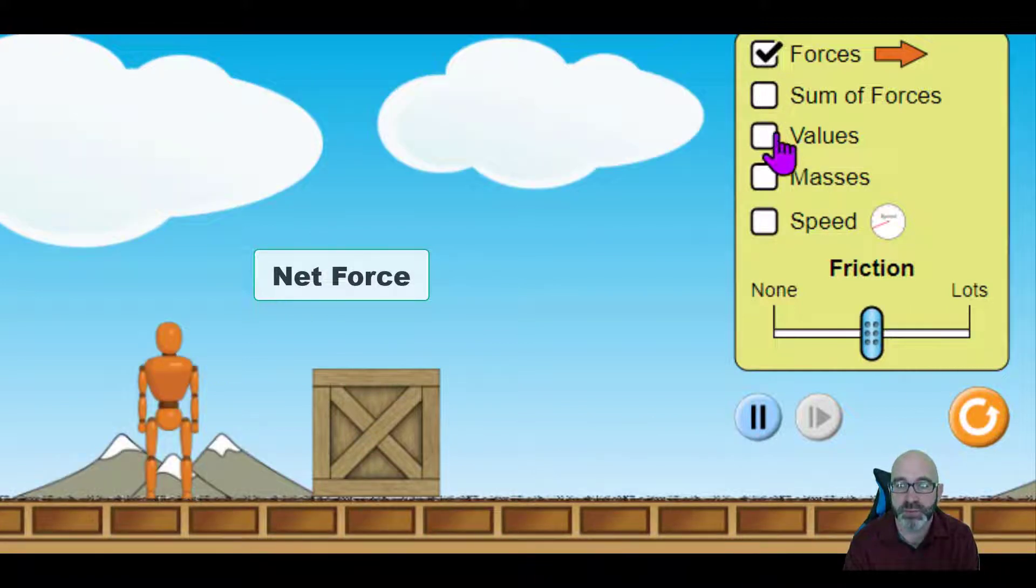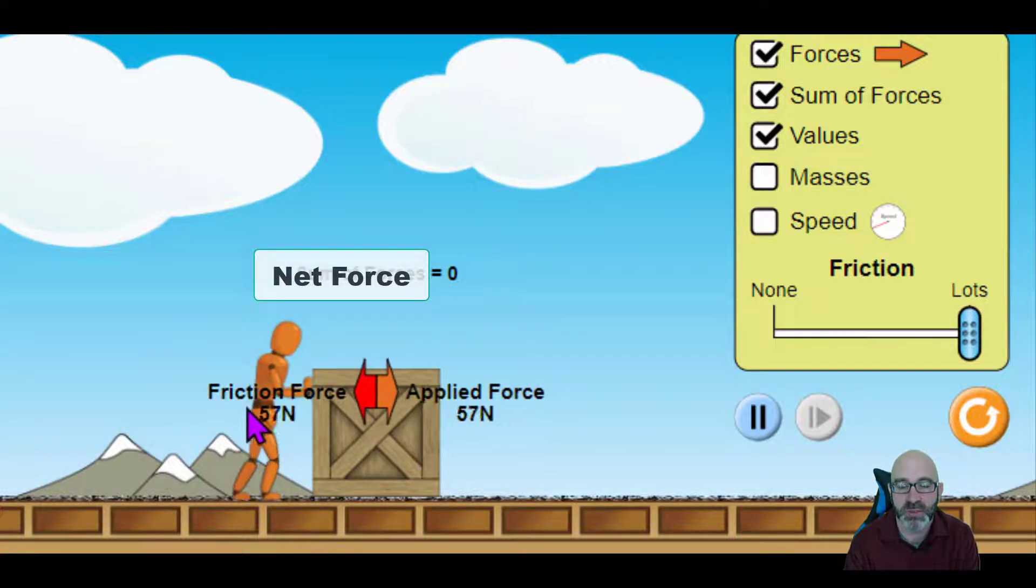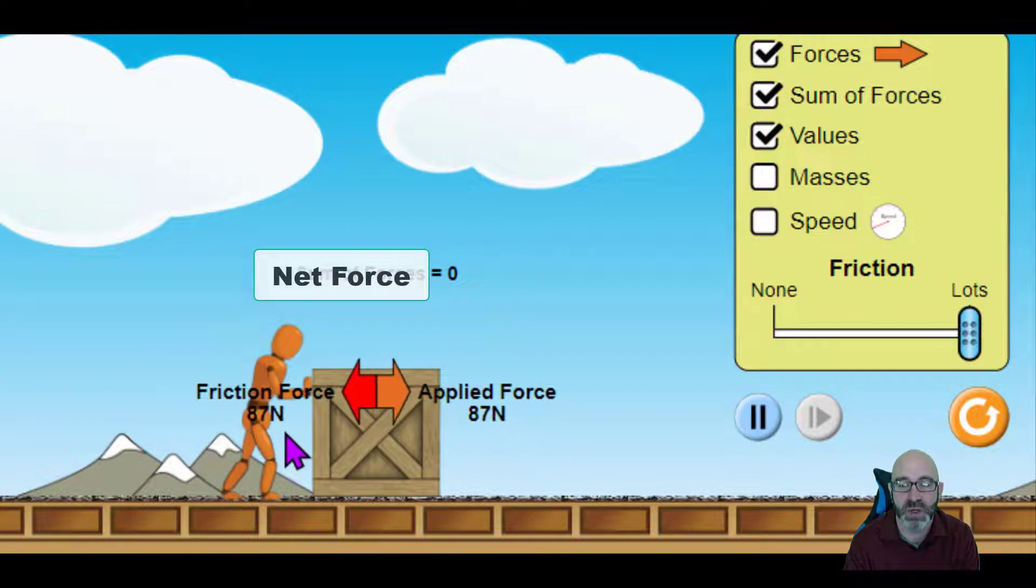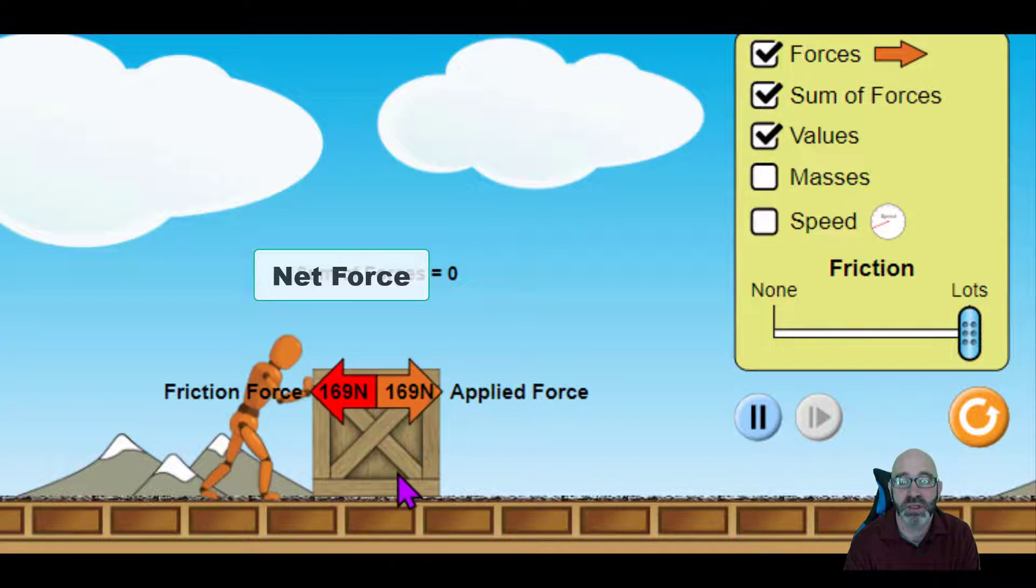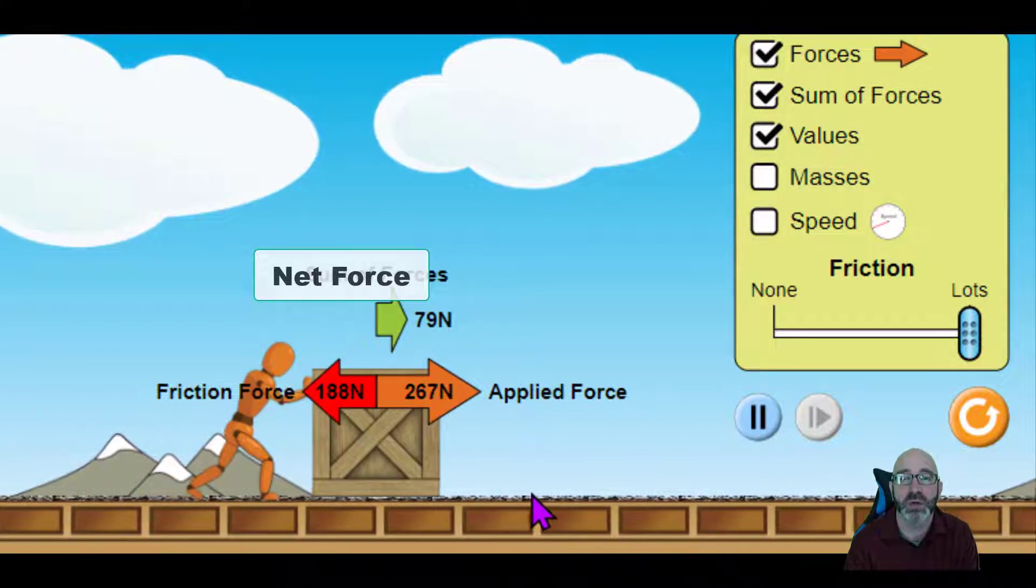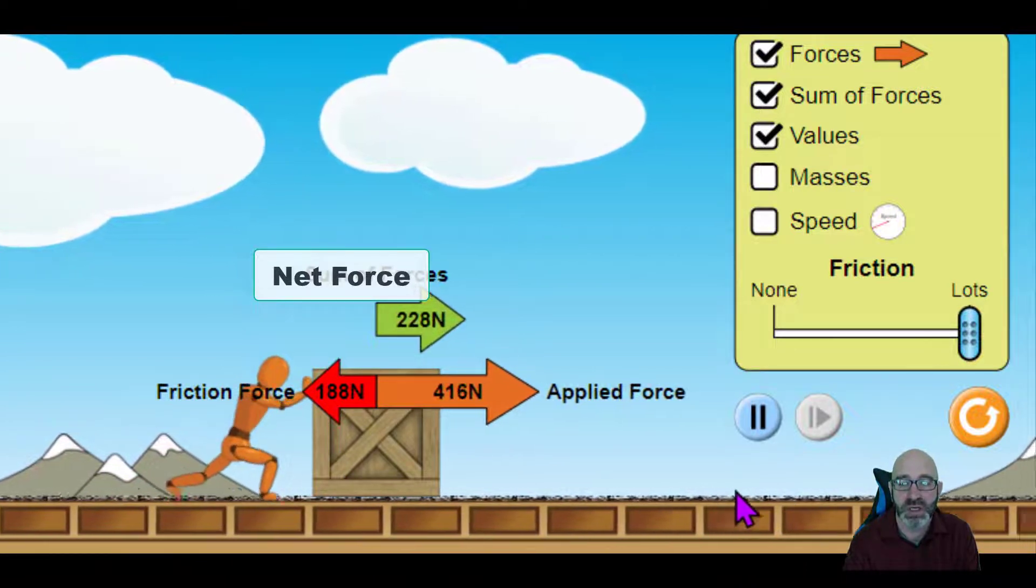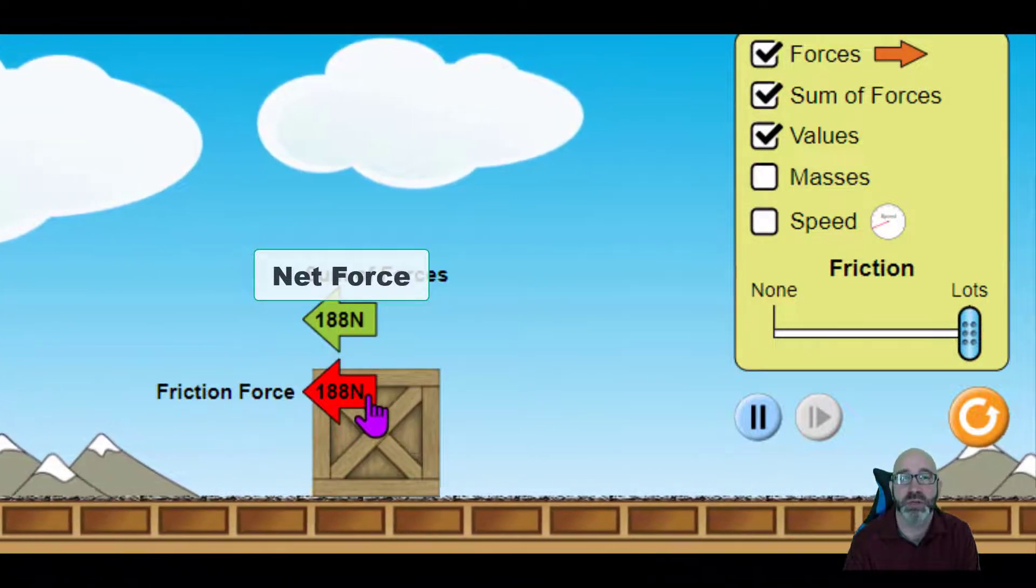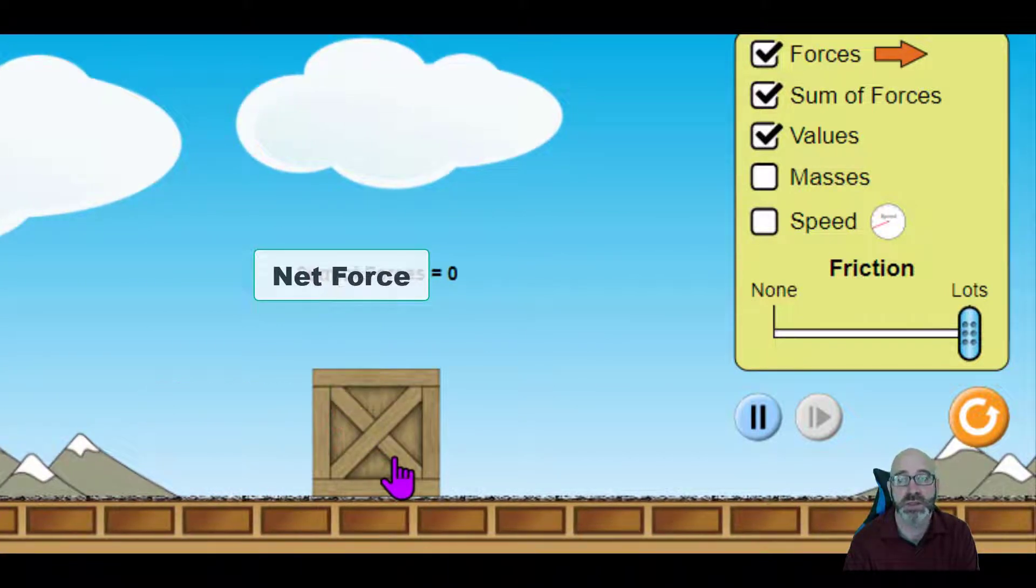What happens if we increase the friction to lots? The amount of force the orange figure is required to apply gets bigger and bigger and bigger, not only to overcome inertia, but also to overcome frictional forces. And so a lot more force is required in order to get that box to start moving. Once it is moving, the frictional forces are much, much bigger and the box comes to a rest much sooner.